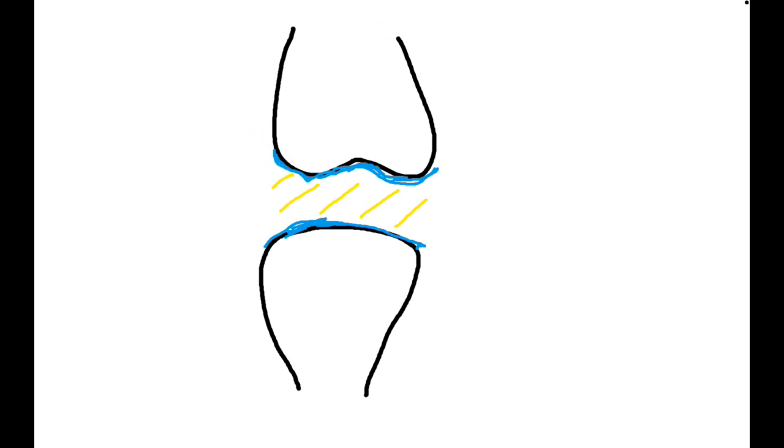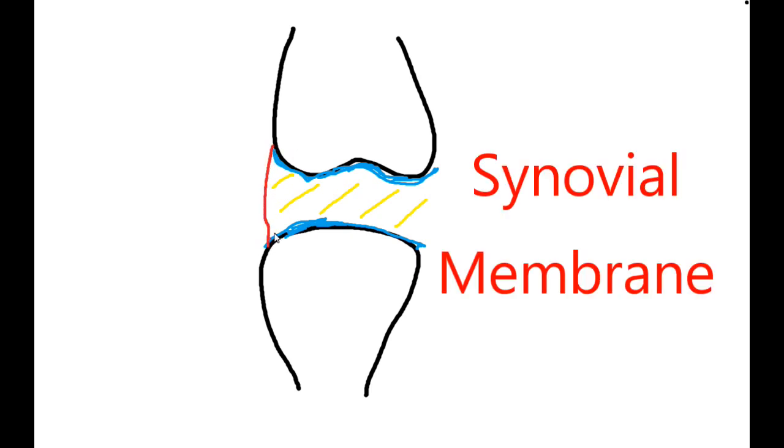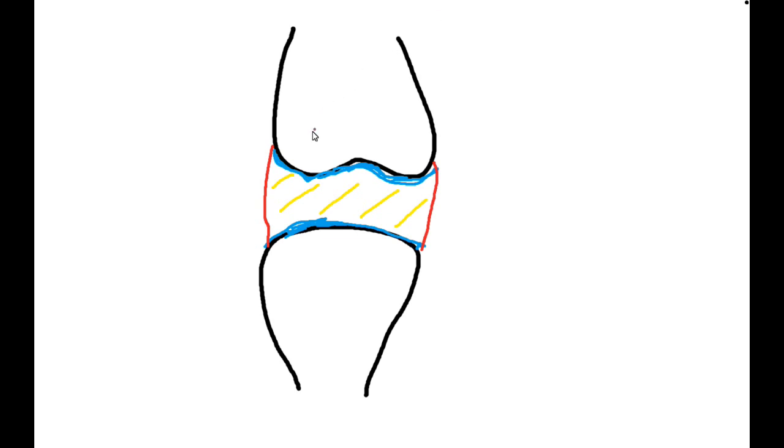Now synovial fluid has to be produced by something, and that something is the synovial membrane. The synovial membrane, which I'll put here in red, surrounds this cavity. But the membrane itself isn't tough enough to sit there by itself, therefore we need something which overlaps that as well, which I'll put here in purple.